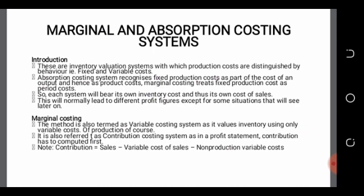The marginal costing system is also termed the variable costing system in that it uses only variable cost components of a product involving inventory. But it is also referred to as a contribution costing system because with reference to a profit statement, contribution will be computed first. We know that contribution equals sales less variable costs of sales.